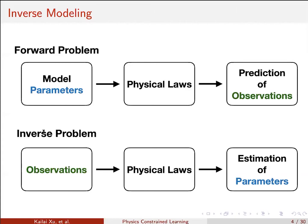Generally, you have the forward problem, where you go from the model parameters through the physical laws described by partial differential equations, and then obtain a prediction of observations — this is called predictive modeling. For the inverse problem, you start from the observations but do not know the model parameters, so you combine your observations with physical laws to get an estimation of the parameters.